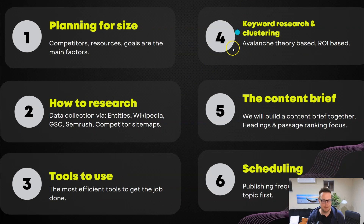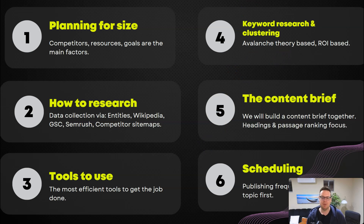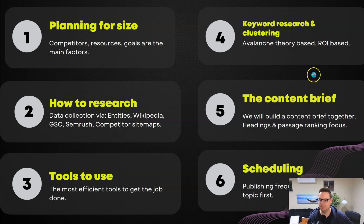The fourth video covers keyword research and keyword clustering. We will use the avalanche theory to first publish articles that are easy to rank for, so that you can accumulate data in Google's eyes, get user metrics, and gain Google's trust slowly by first getting some visitors from easy-to-rank articles.